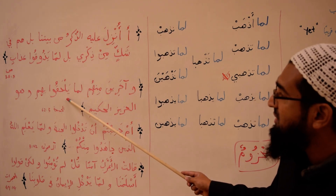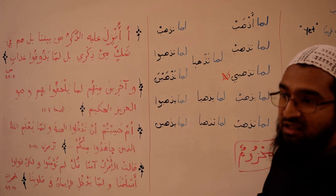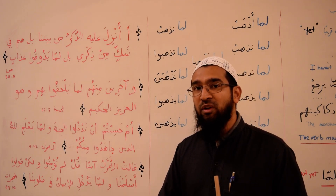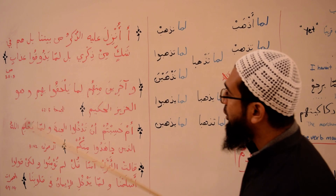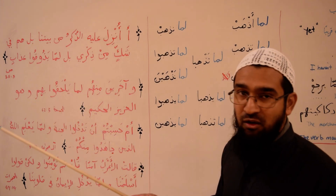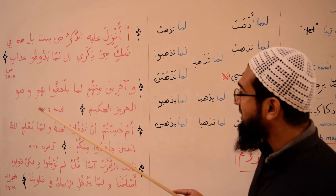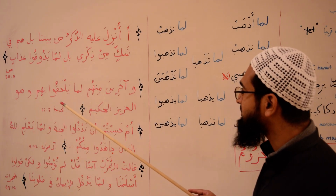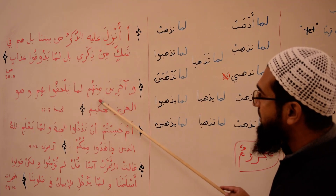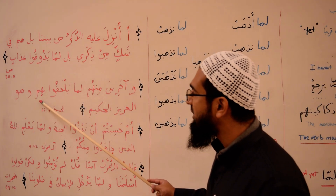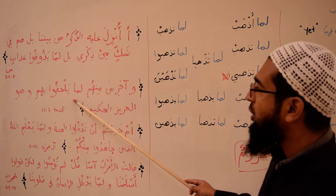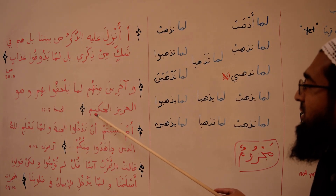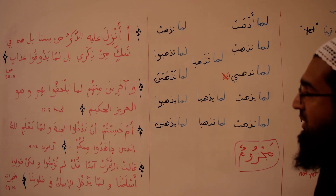لَمَّا يَلْحَقُوا بِهِمْ — they haven't met that first generation. لَحِقَ يَلْحَقُ means to be connected, attached, or joined with something. So we haven't been joined with them as yet, but we will join them soon inshallah. وَآخَرِينَ مِنْهُمْ لَمَّا يَلْحَقُوا بِهِمْ — they haven't been joined with them yet. وَهُوَ الْعَزِيزُ الْحَكِيمُ — And Allah is Al-Aziz, the Almighty, Al-Hakim, the All-Wise.